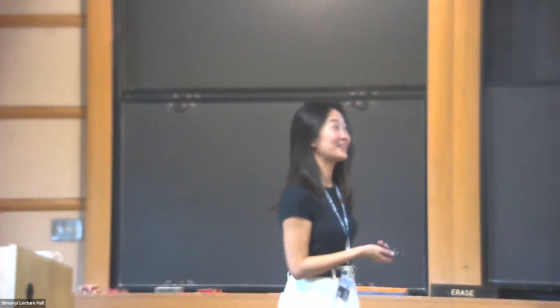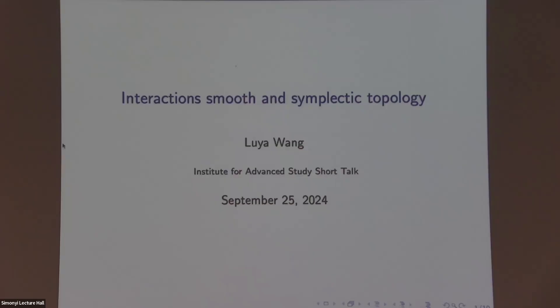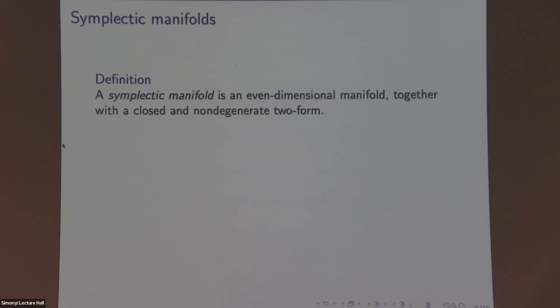So I'm a symplectic topologist, and I would like to tell you some questions I like to think about and some themes of others in mind. Let's start with the definition of symplectic manifold. A symplectic manifold is an even-dimensional manifold together with a closed and non-degenerate two-form. The non-degeneracy here means the top wedge product is a volume form.